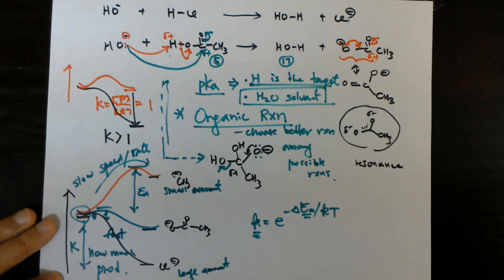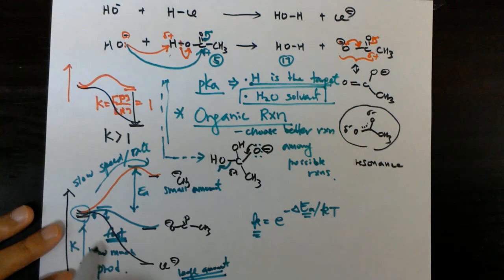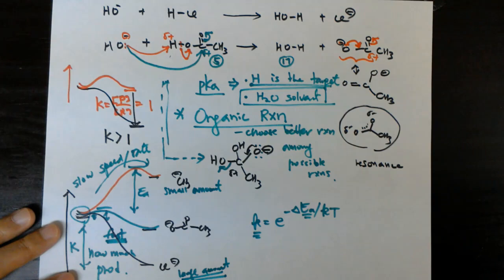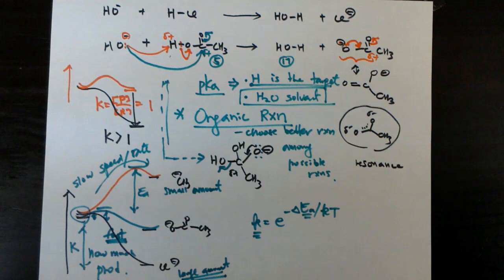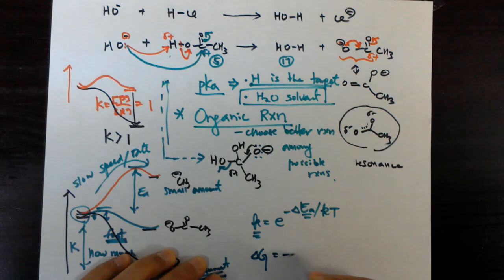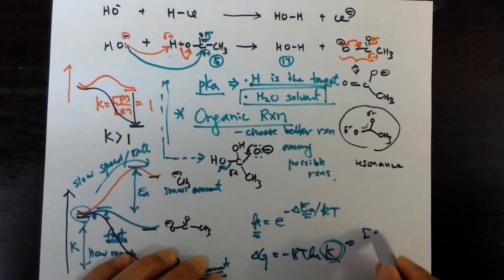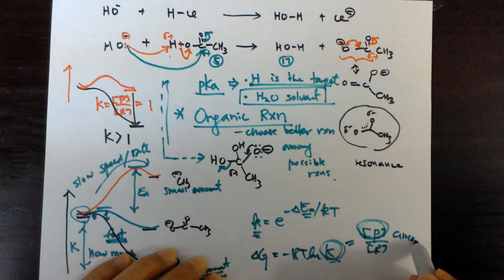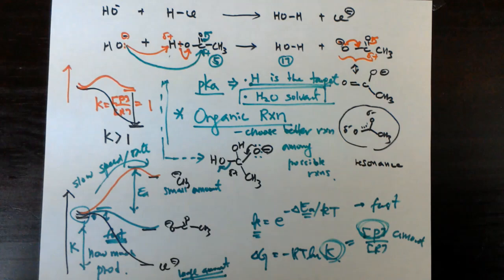I want you to distinguish rate — how fast or slow — from amount — how much product. Here, the faster one forms more and the slower one forms less, which seems similar. But it's not always the case, so it's important to tell them apart. K value is about how much product you get relative to reactant — it's about amount. Activation energy is about how fast. They are different and can go against each other later, and we have to control conditions to choose.